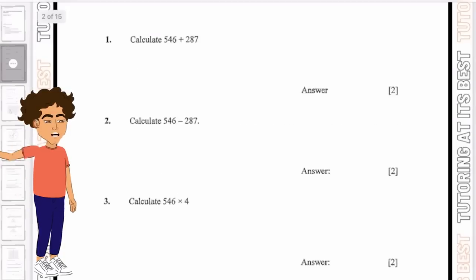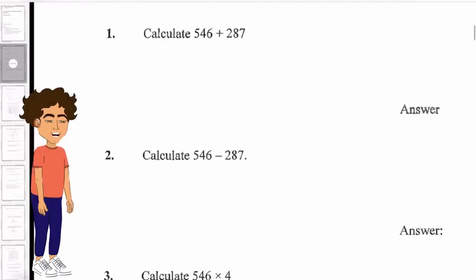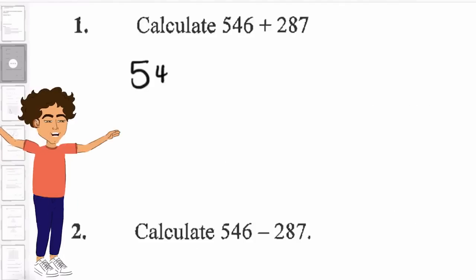Question number one, 546 plus 287. I'm going to dive in with the column method right away. We'll have 546 plus 287.